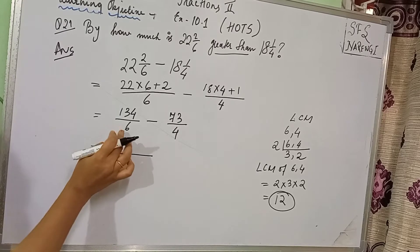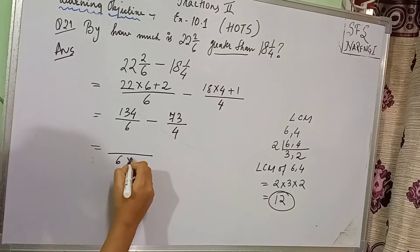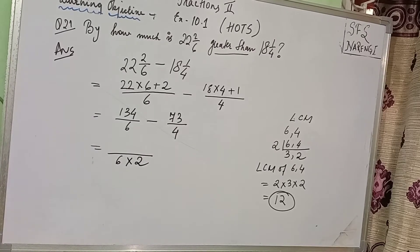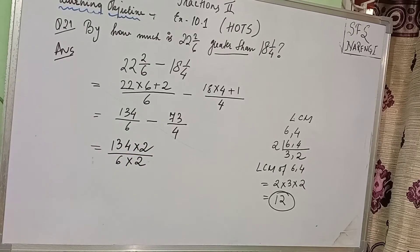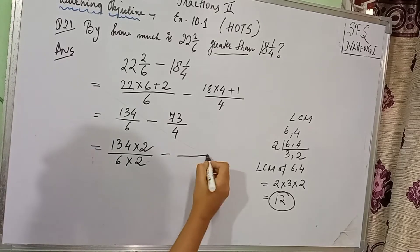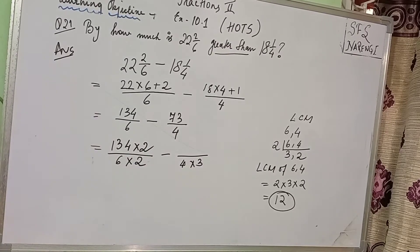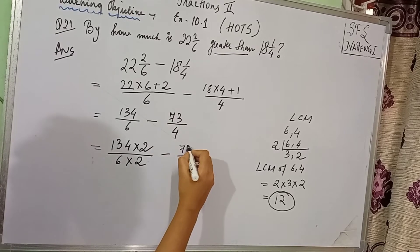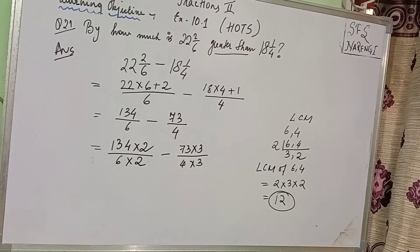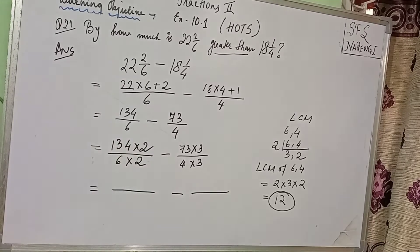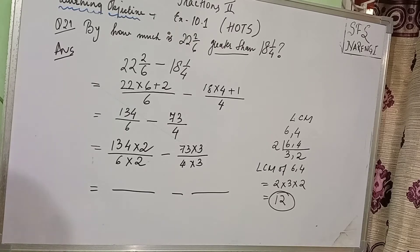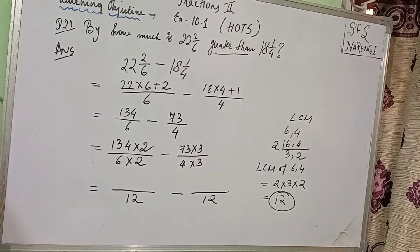Now children, when will the denominator 6 become 12? If you multiply it with 2. Since I am multiplying the denominator with 2, I will multiply the numerator also by 2. When will the denominator 4 become 12? If I multiply it with 3, because 4 multiplied by 3 is 12. Since I am multiplying the denominator with 3, I will also have to multiply the numerator with 3. Pause the video and multiply — make a workspace. You will get 12 and 12 on the denominators.